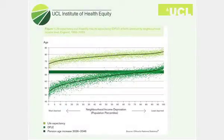I hope most of you have seen this — it's what we call Figure 1 in the Marmot Review. It shows life expectancy, the pale green dots along the top, and disability-free life expectancy, the dark green dots, which is a measure of health, and that's related to a level of neighbourhood deprivation.